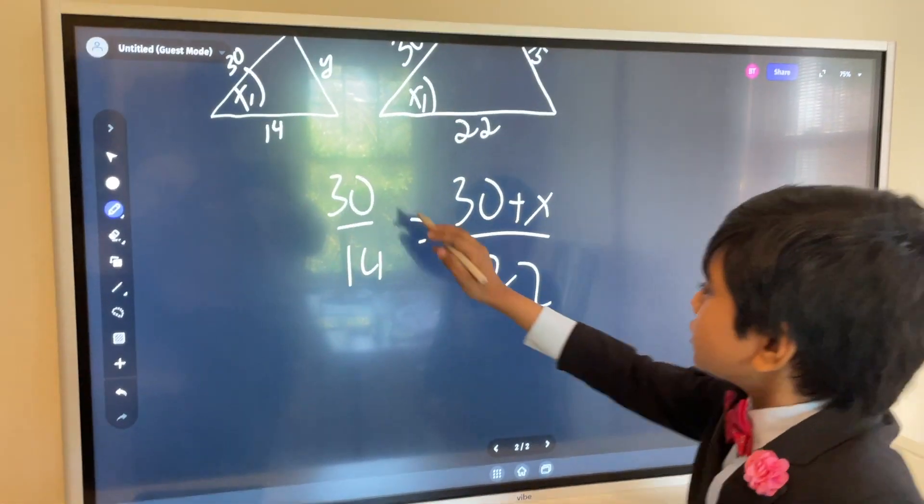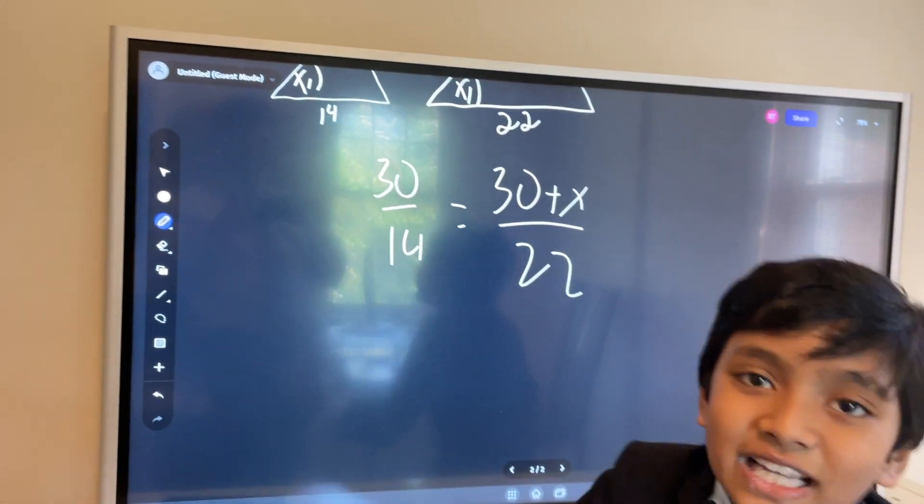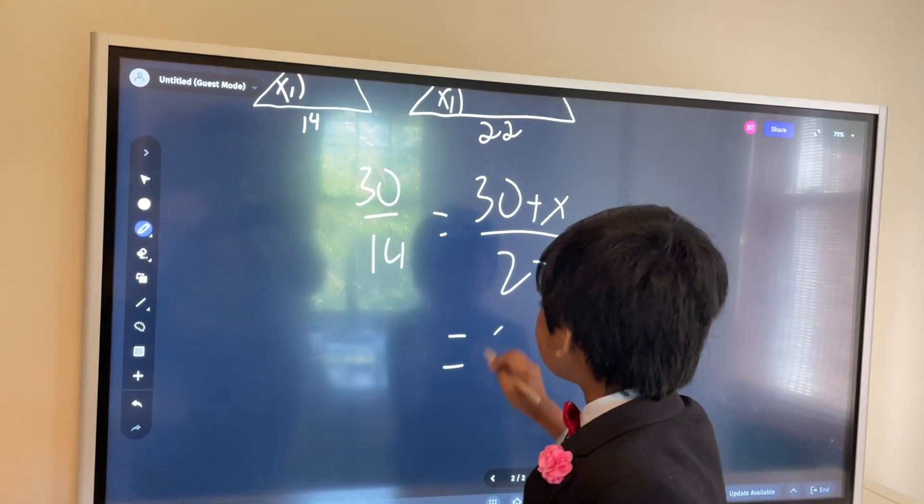Alright, so 30 times 22. Great! Do the math! 660!